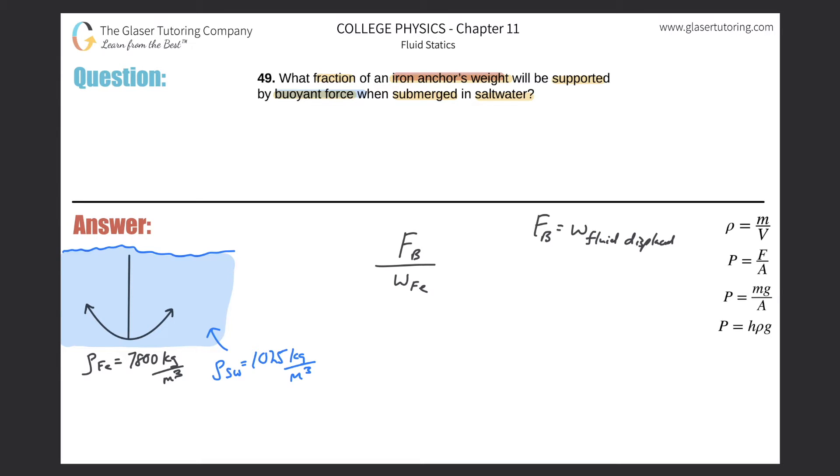...and drop it into the water, the volume of this anchor displaces an equal amount of volume of water. Although the volumes are the same, the masses might be different because they have different densities. But that's the idea of buoyant force.